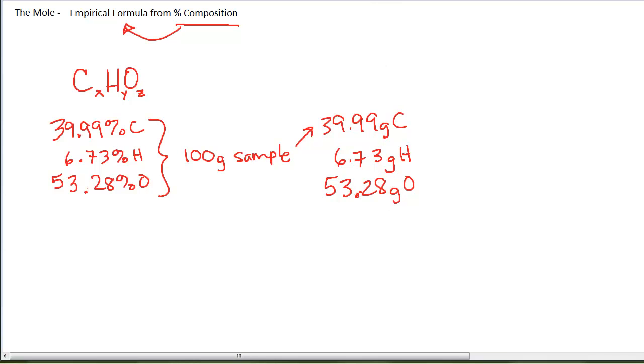Now these are the grams of each of these elements, and the formula, these subscripts are not grams of each of these. Notice I've just labeled them as XYZ sort of to hold the place. The XYZ subscripts are moles. These are the mole ratios, they're not the grams.